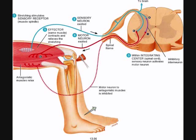Every reflex arc is going to require five steps or five components in order to function properly. I'm going to use this picture of a stretch reflex as an example of those five components. The first component is the receptor. Every reflex is going to require a sensory receptor — something's going to have to monitor the situation in order for it to create an effect. Once that receptor is stimulated, it's going to have to generate a nerve impulse along a sensory neuron, which is the second component of the reflex arc.